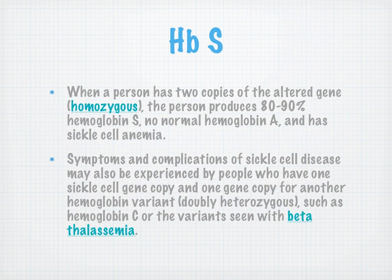When a person has two copies of the altered gene — homozygous — they produce 80 to 90% hemoglobin S and absolutely no normal hemoglobin A. They have sickle cell anemia. Symptoms and complications of sickle cell disease may also be experienced by those who have a single gene copy combined with one copy of another hemoglobin variant.